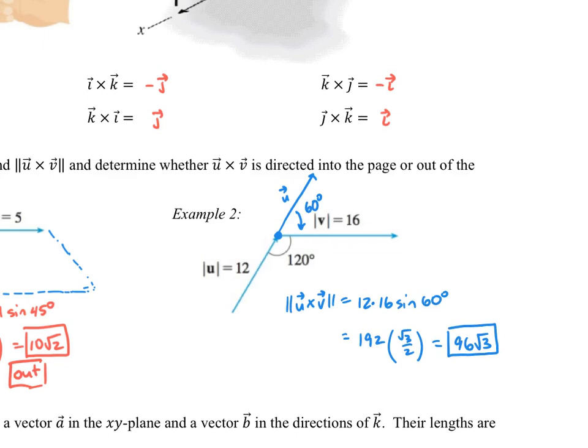This time, position your hands so your fingers are extended pointing towards U and curl them towards V. If you can do that successfully, you'll find that your thumb is pointing into the page this time instead of out of the page.